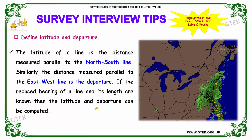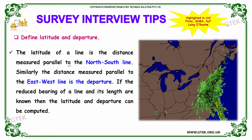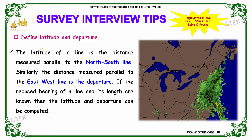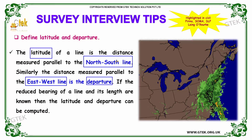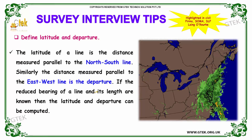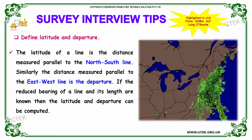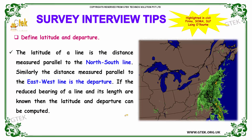Our next question is: define latitude and departure. The latitude of a line is the distance measured parallel to the north-south line. Similarly, the distance measured parallel to the east-west line is the departure. If the bearing of the line and the length of the line are known, then latitude and departure can be computed.